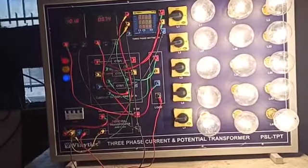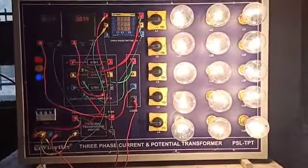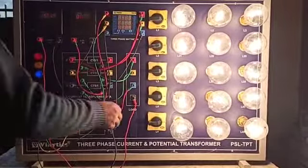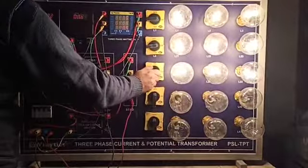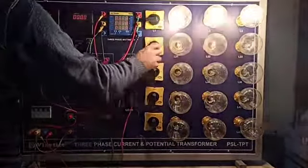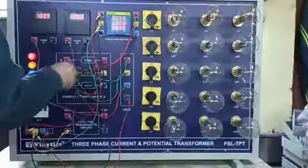So as you can see from the theory, the CT ratio is 4.85 for the CT, three-phase CT that we have used. So this is the complete working of the panel of three-phase CT and PT.